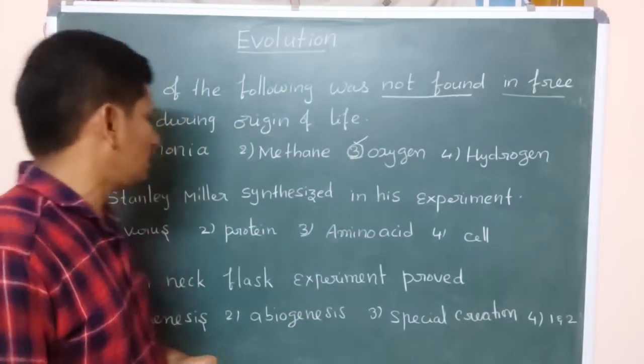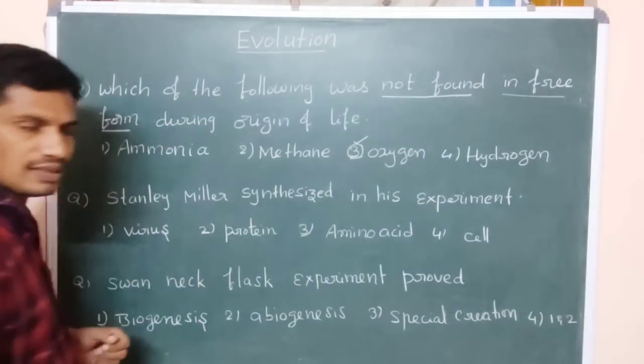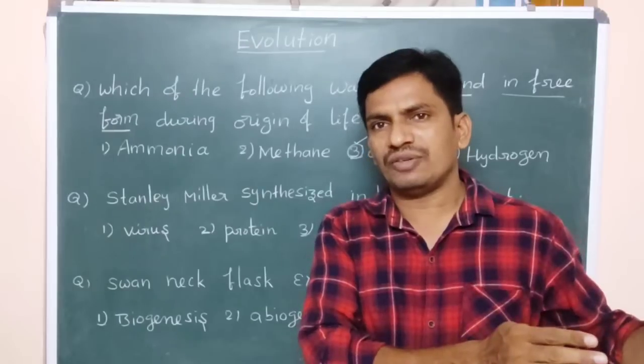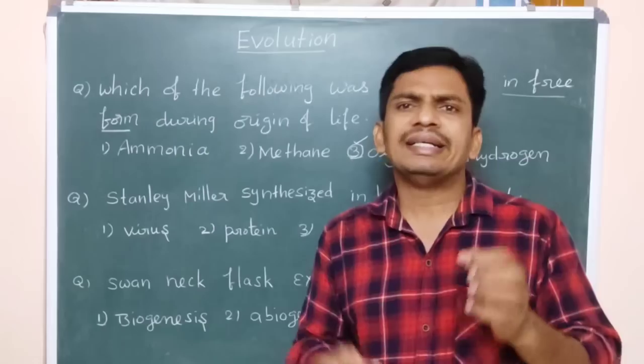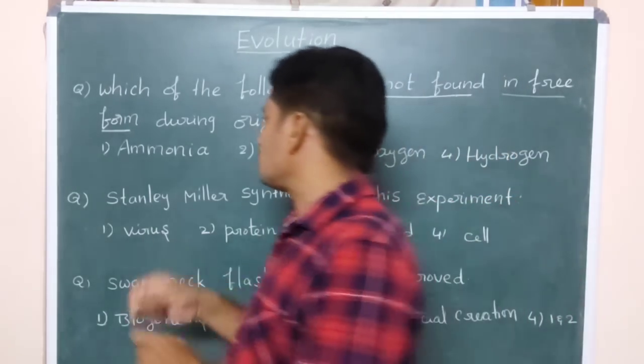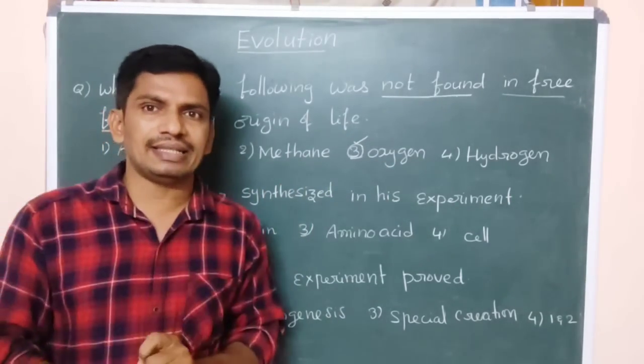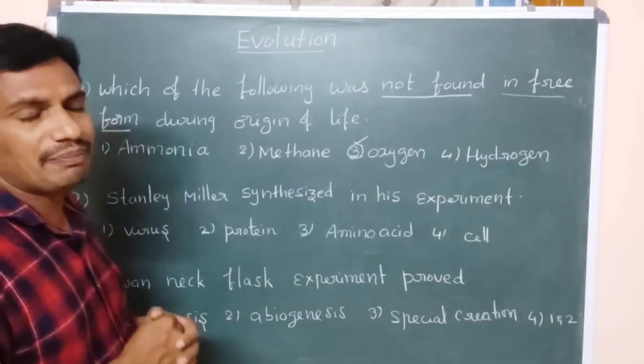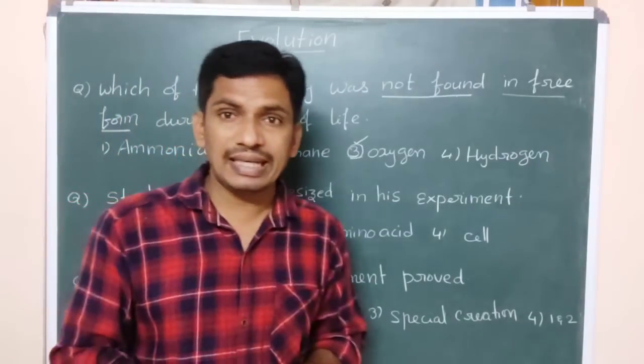Third one is the option, right. We'll go for the next one. Stanley Miller synthesized in his experiment. You know that Stanley Miller experiment, he was created how the conditions were there in the origin of life. The same conditions he was created in the simulated laboratory condition. In that he used electrodes to produce 800 degree centigrade. At that time he used ammonia and methane and hydrogen at 80 degree centigrade. After he bought in the prebiotic soup prepared, the hot dilute soup.